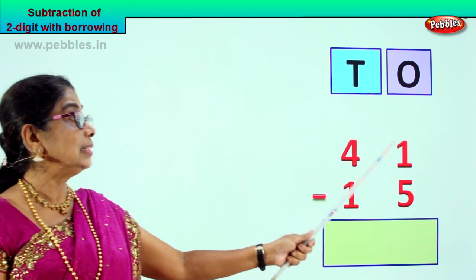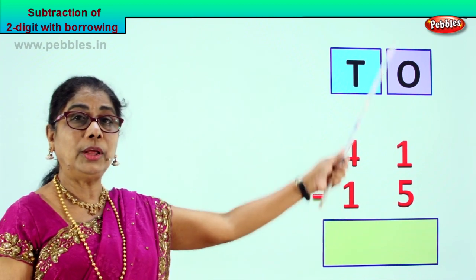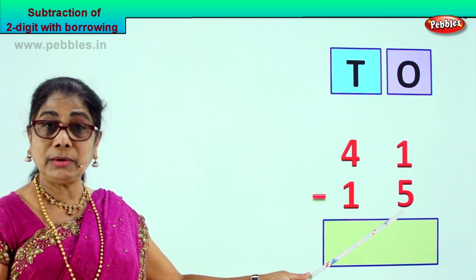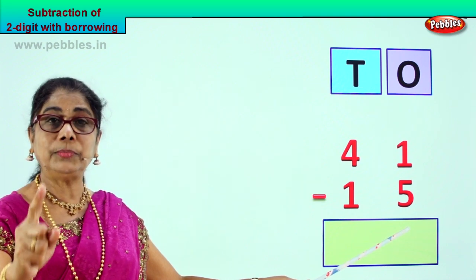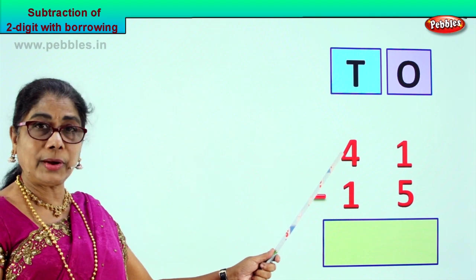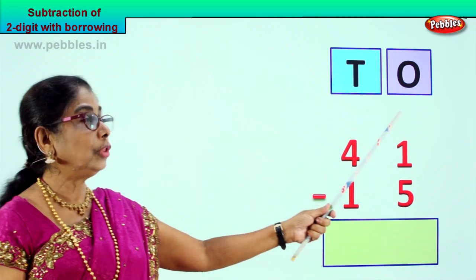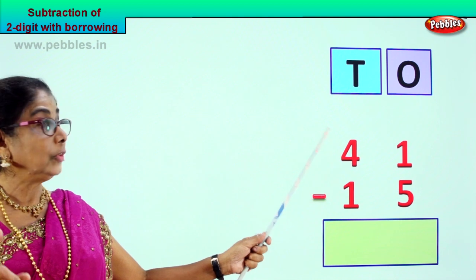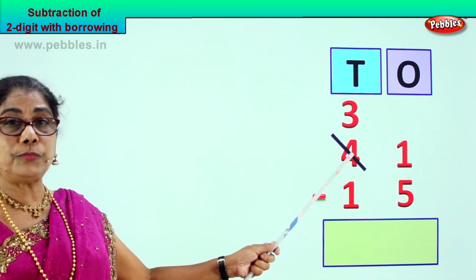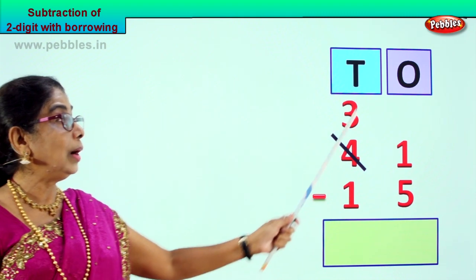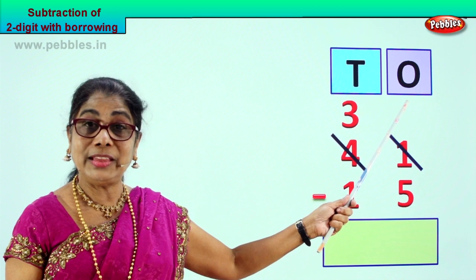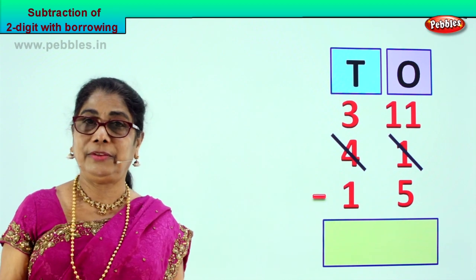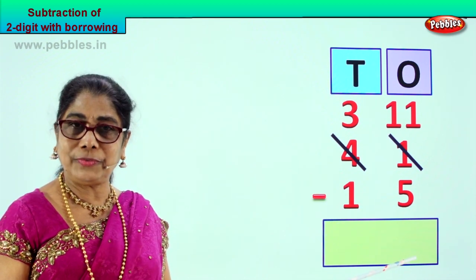Now you have 4 tens, 1 one, 1 ten, 5 ones. Look at the 1's place — you have 1 here, you have 5 here. 1 is a small number, you cannot take away 5 from 1. So here we borrow 1 ten from here and bring it to the 1's place. 1 ten plus 1 will be 11. So we are going to borrow 1 ten, so we cross this out. When you take away 1 ten from 4, you get 3. That 1 ten plus 1 is 11. Now we finish borrowing 1 ten — now 11 take away 5. From 11 take away 5 is 6.